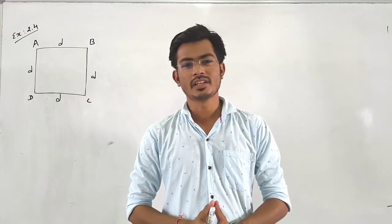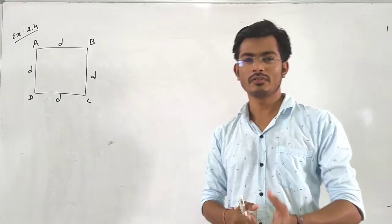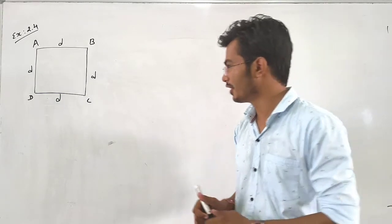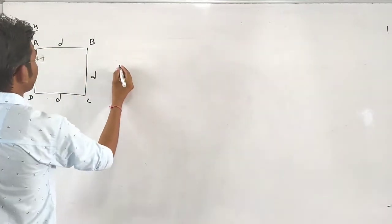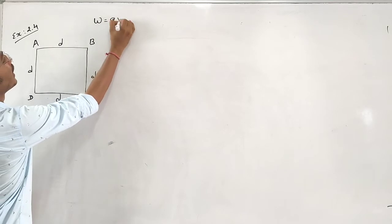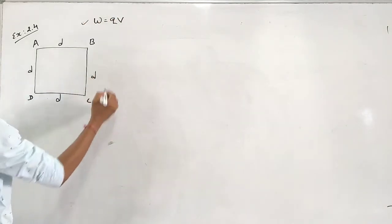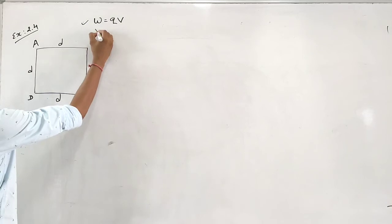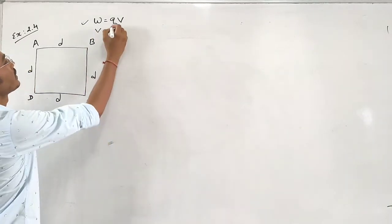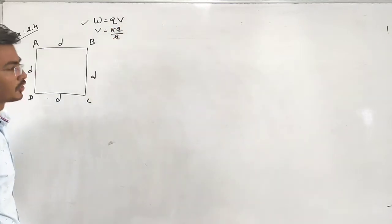In this example we have to find out the work. We already have the equation: W is equal to Q into V. This equation, as well as another equation: V is equal to kQ divided by R, the potential.